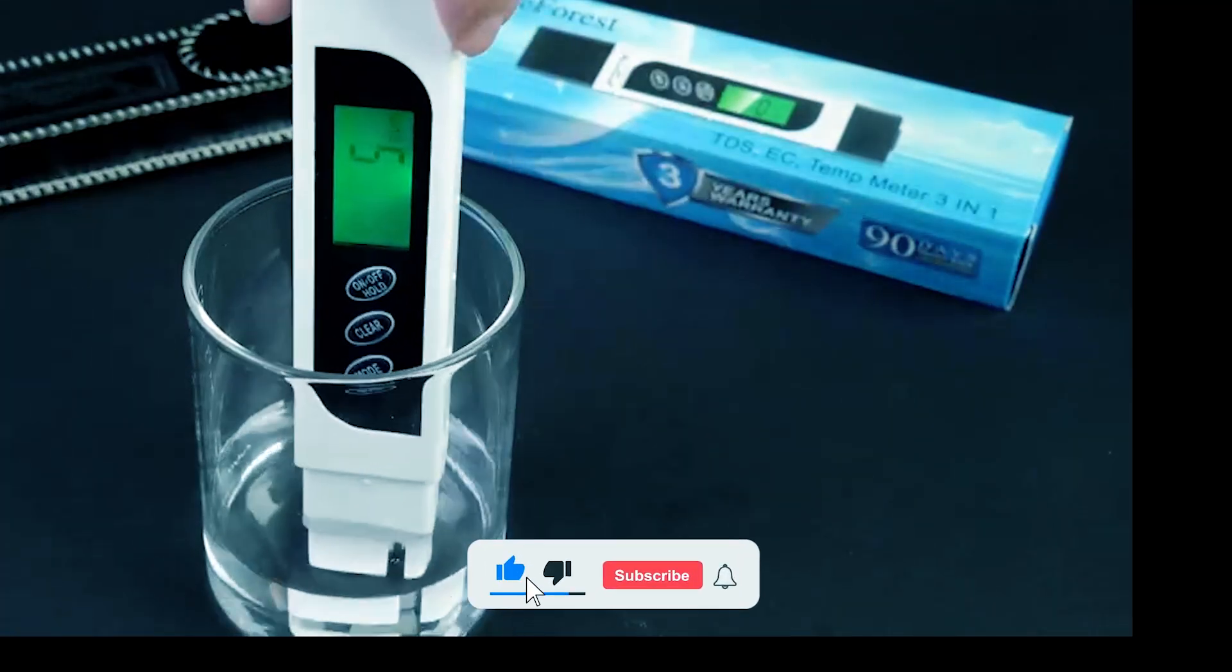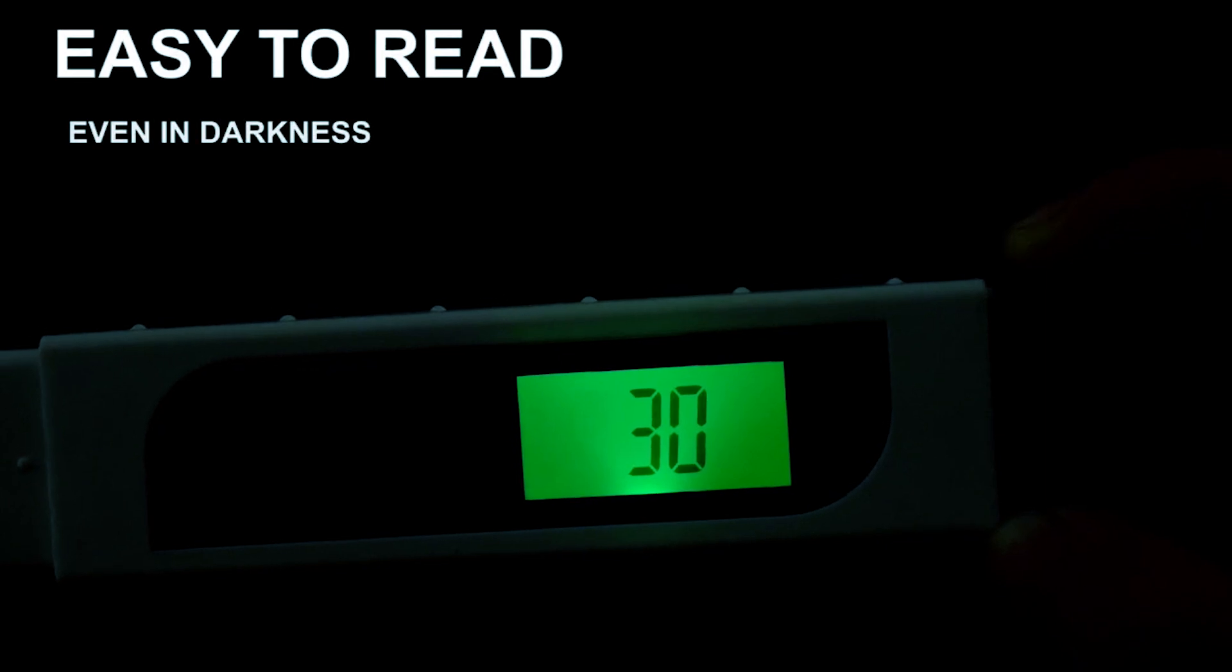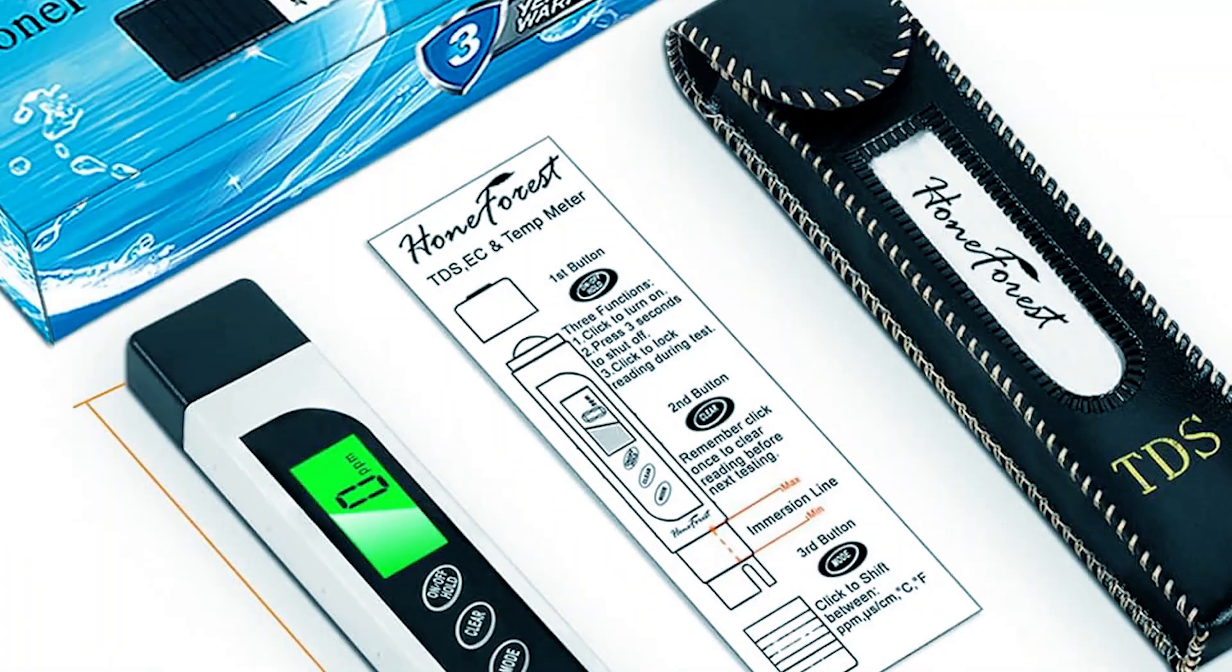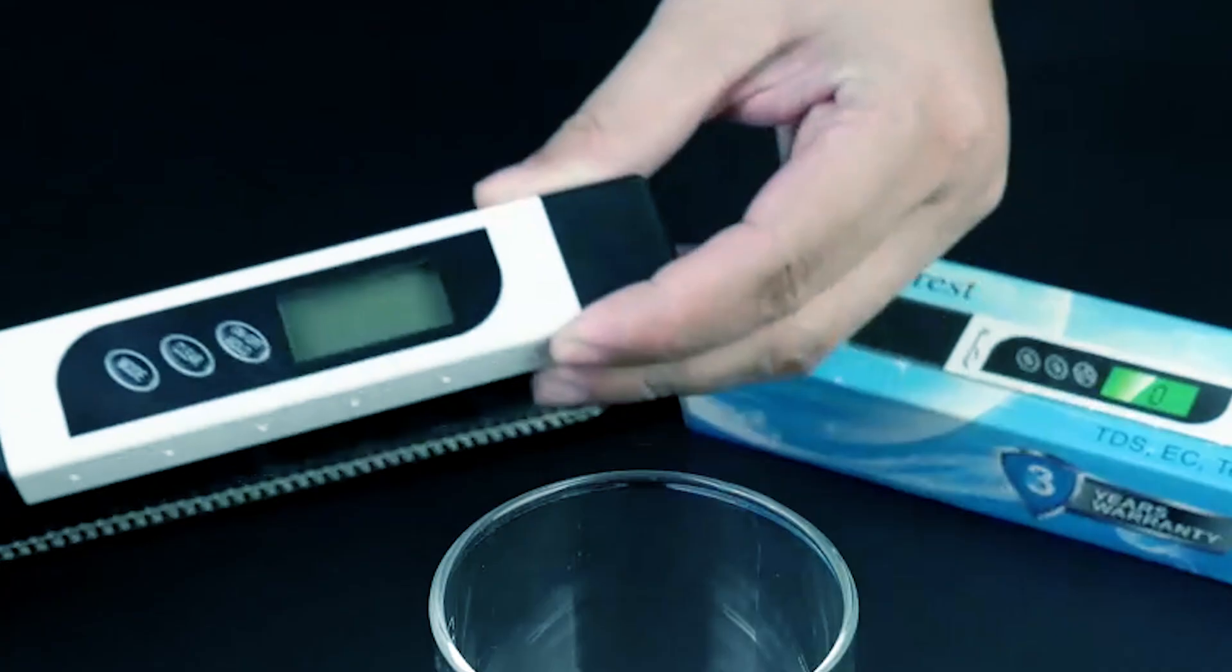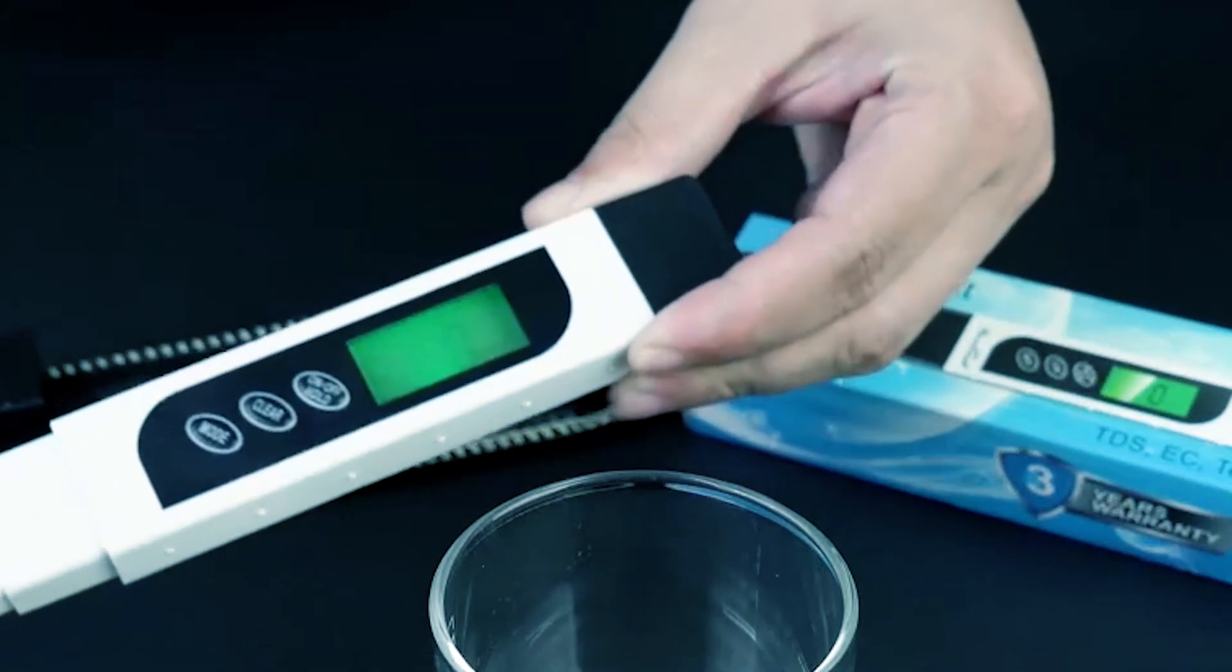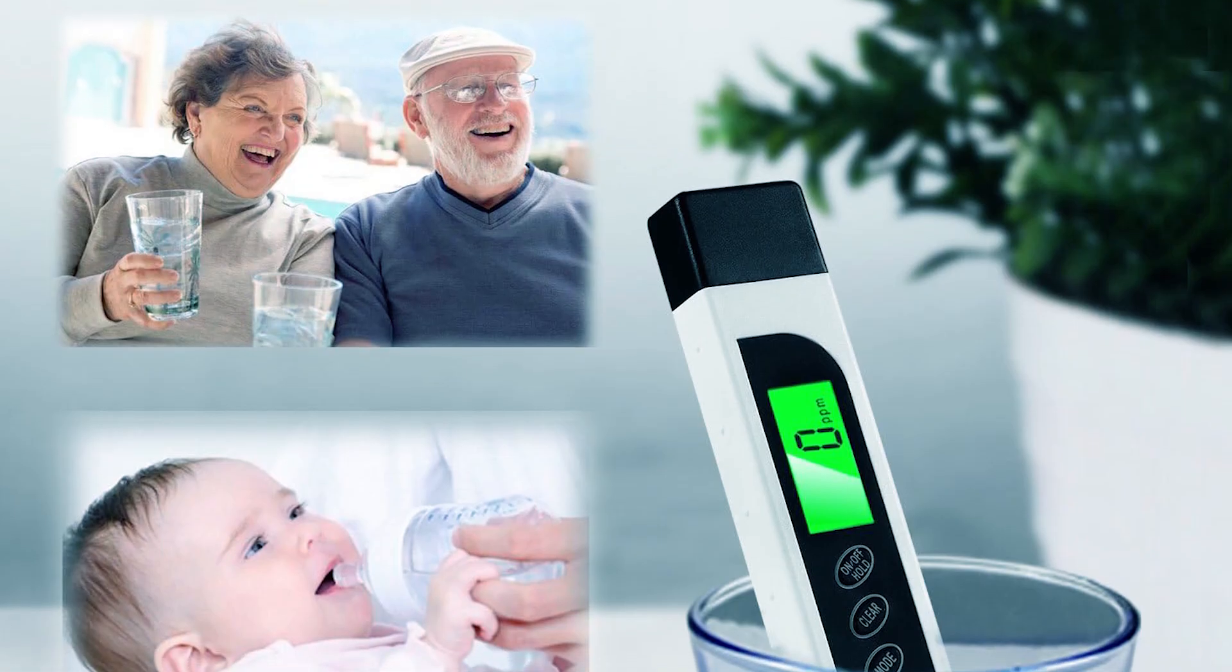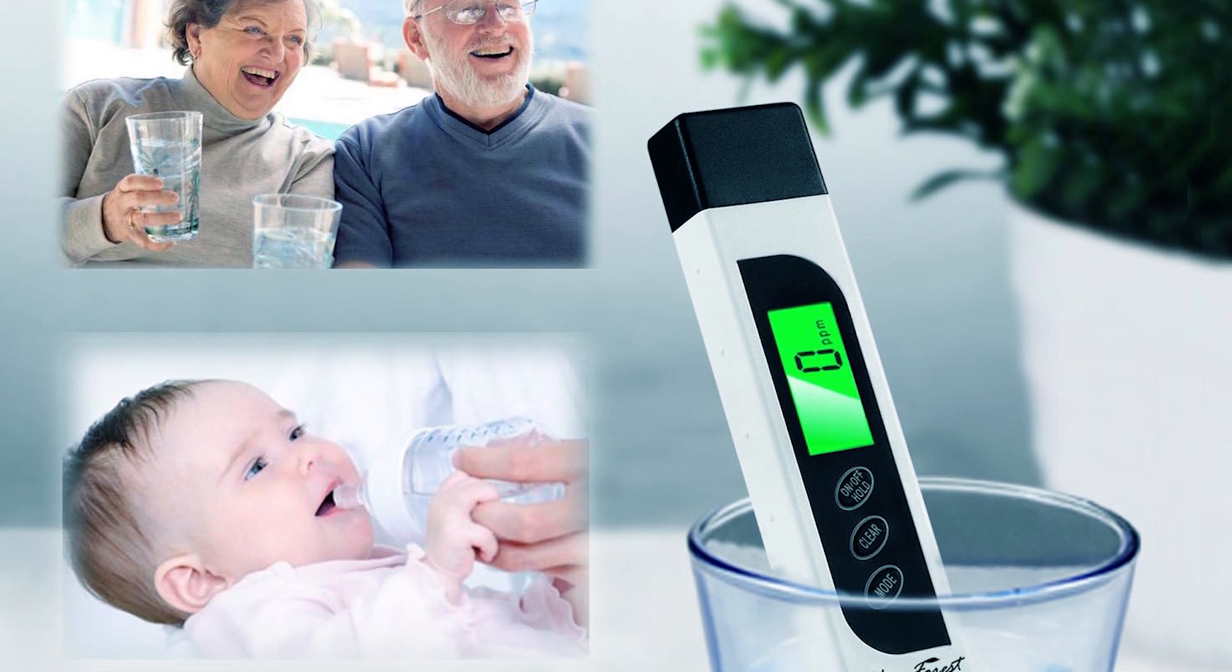The meter automatically locks and displays results for convenient reading, and its backlight ensures visibility in various lighting conditions. The package includes the TDS Meter, a paddle clip, and a user manual. It is covered by a 90-day replacement guarantee and a 3-year manufacturer warranty. Note that the device becomes unusable once the battery dies and requires complete replacement rather than just a battery change.